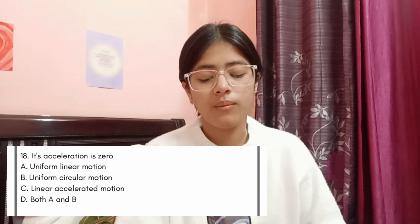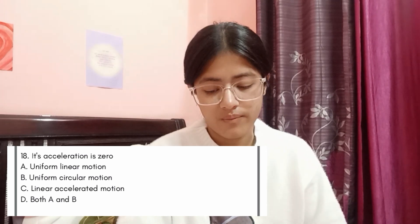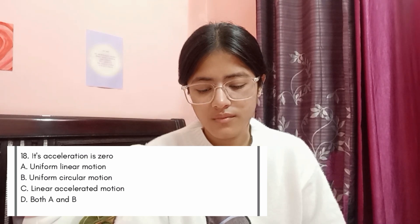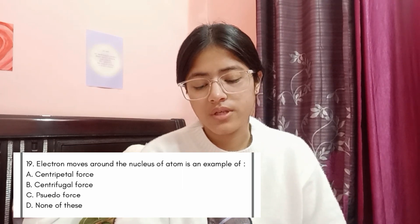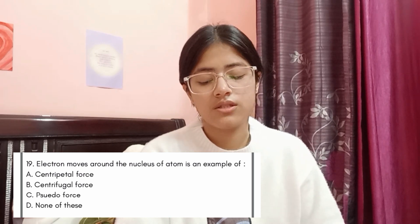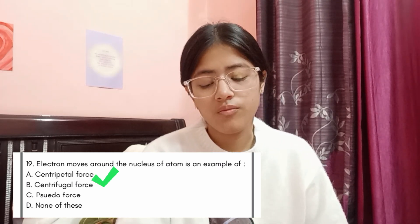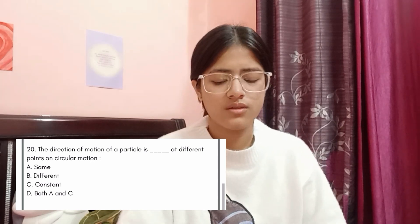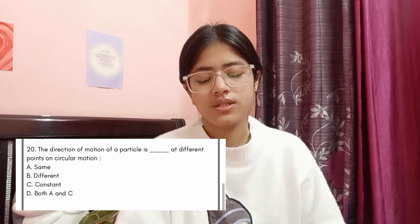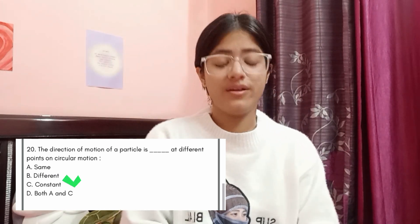Question 18: its acceleration is zero — Option A: uniform linear motion, Option B: uniform circular motion, Option C: linear accelerated motion, Option D: both A and B. The answer is Option A, uniform linear motion. Question 19: an electron moving around the nucleus of an atom is an example of — Option A: centripetal force, Option B: centrifugal force, Option C: pseudo force, Option D: none of these. The answer is centripetal force. Question 20: the direction of motion of a particle at different points on circular motion is — Option A: same, Option B: different, Option C: constant, Option D: both A and C. The answer is Option B, different.